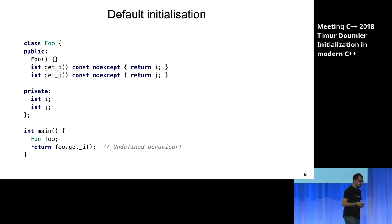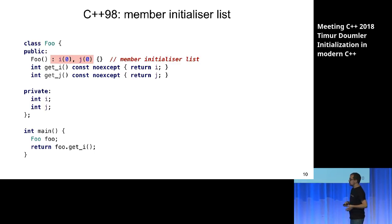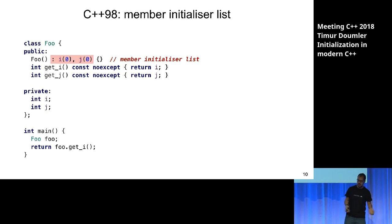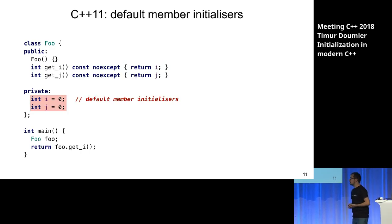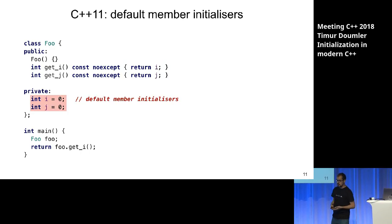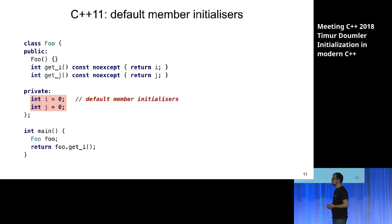This was non-obvious to me when learning C++. But of course C++ introduced ways of initializing members. In C++98 we got the member initializer list, where you initialize members in the constructor. Since C++11 we have default member initializers, where you can initialize them right where you declare them. I think this is really the right way of doing it, and you should use those whenever you can.